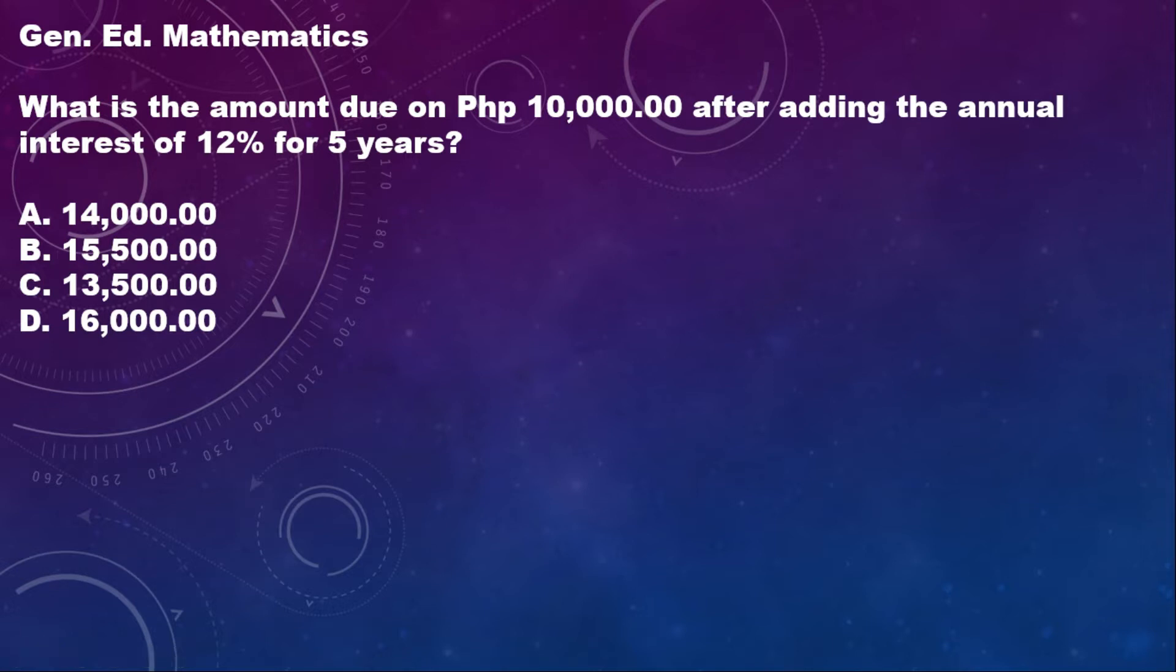The question is: What is the amount due on P10,000 after adding the annual interest of 12% for 5 years? Is it A, 14,000? B, 15,500? C, 13,500? Or is it D, 16,000 pesos?